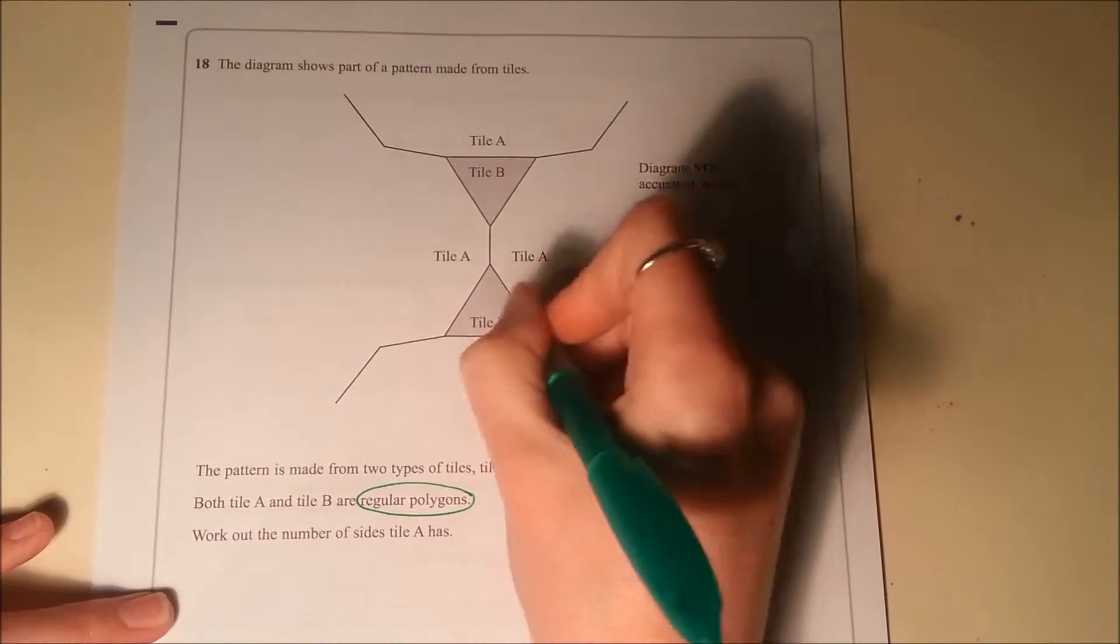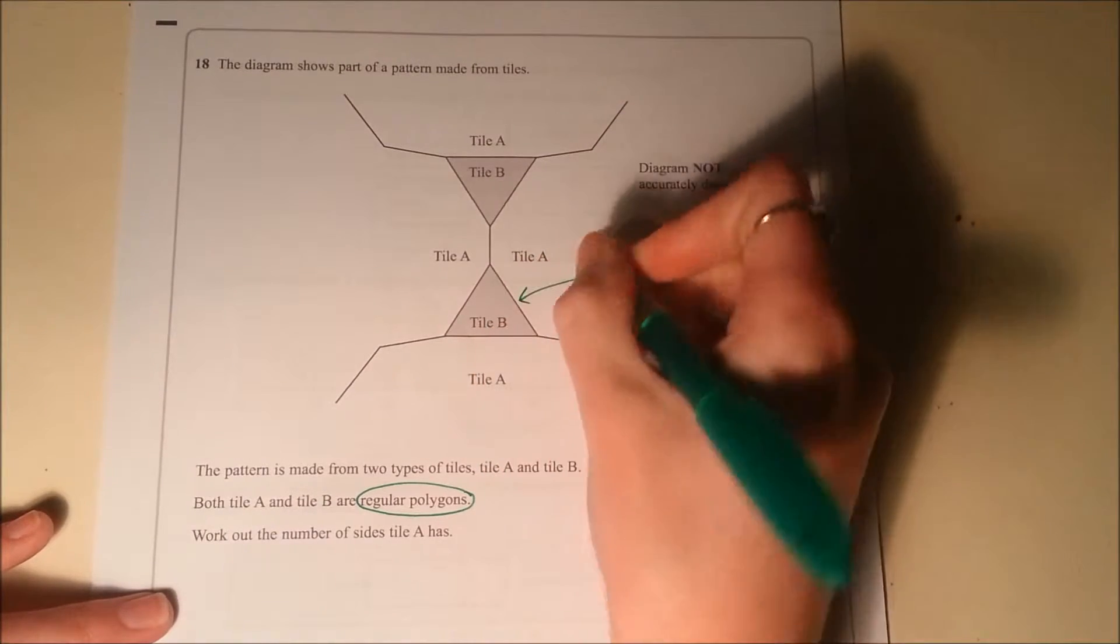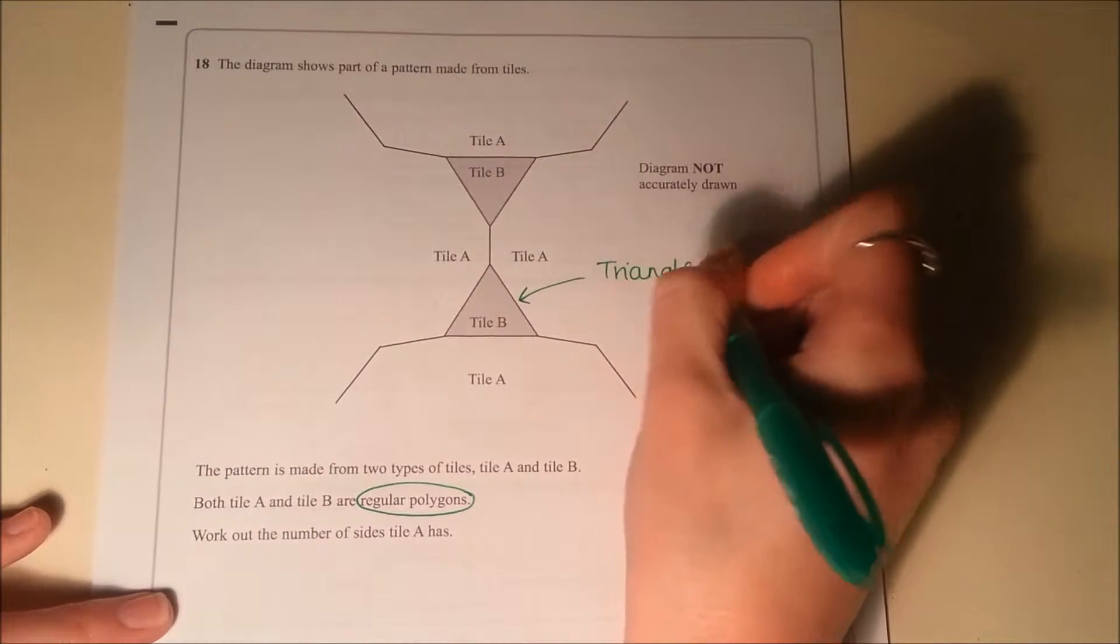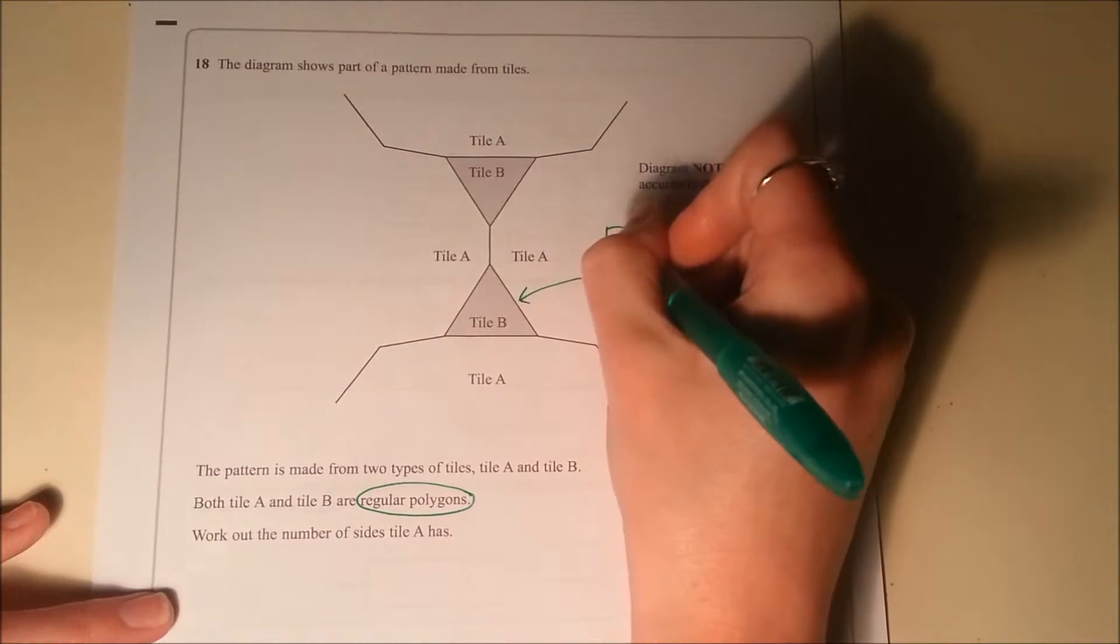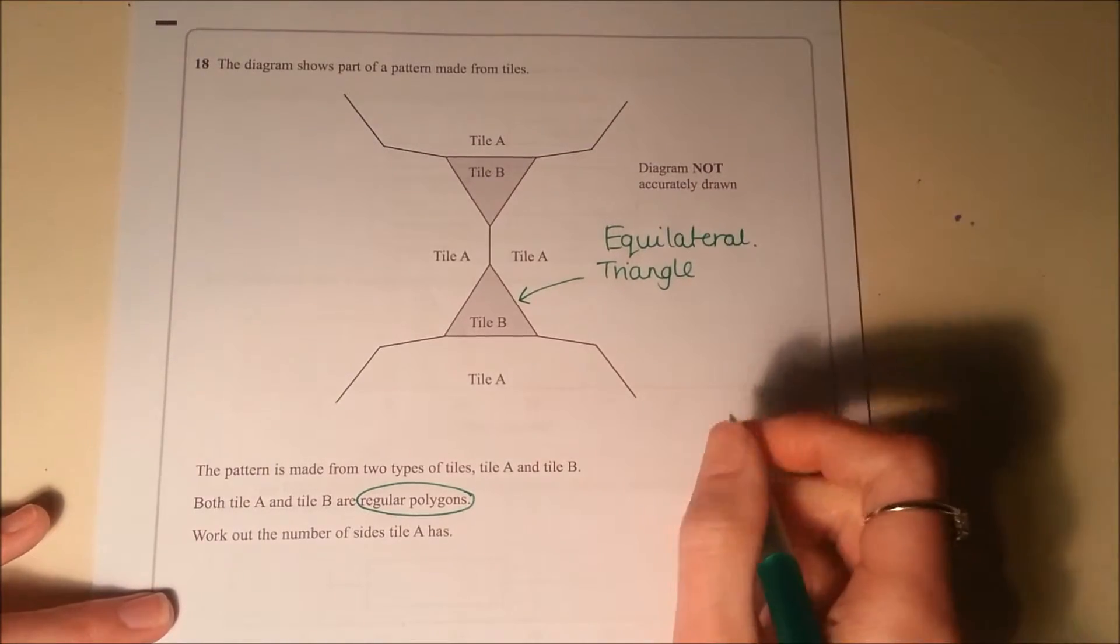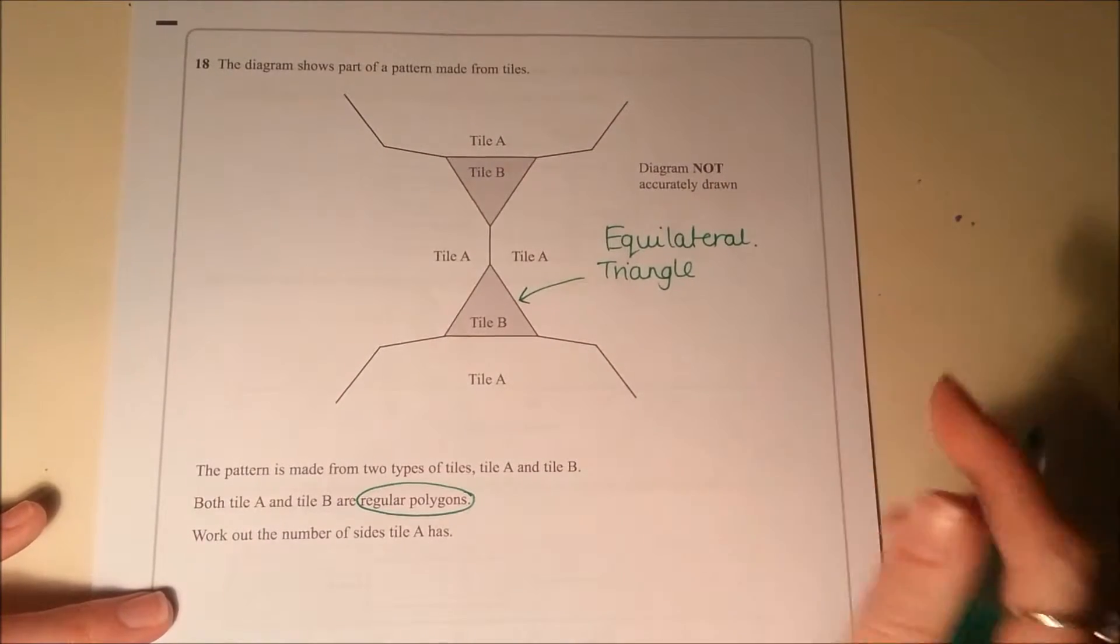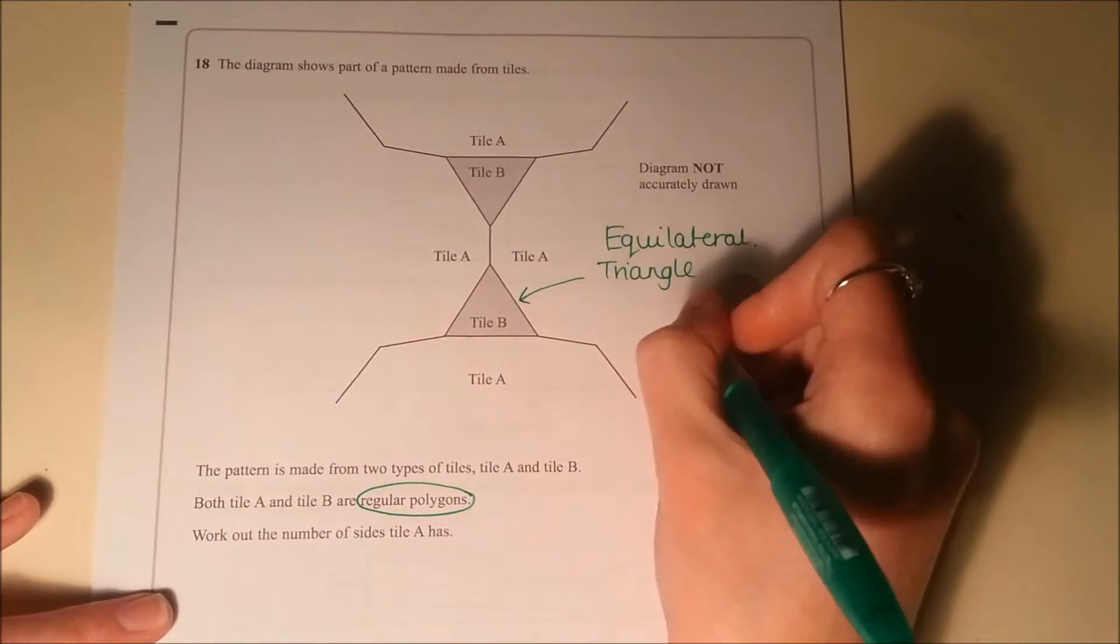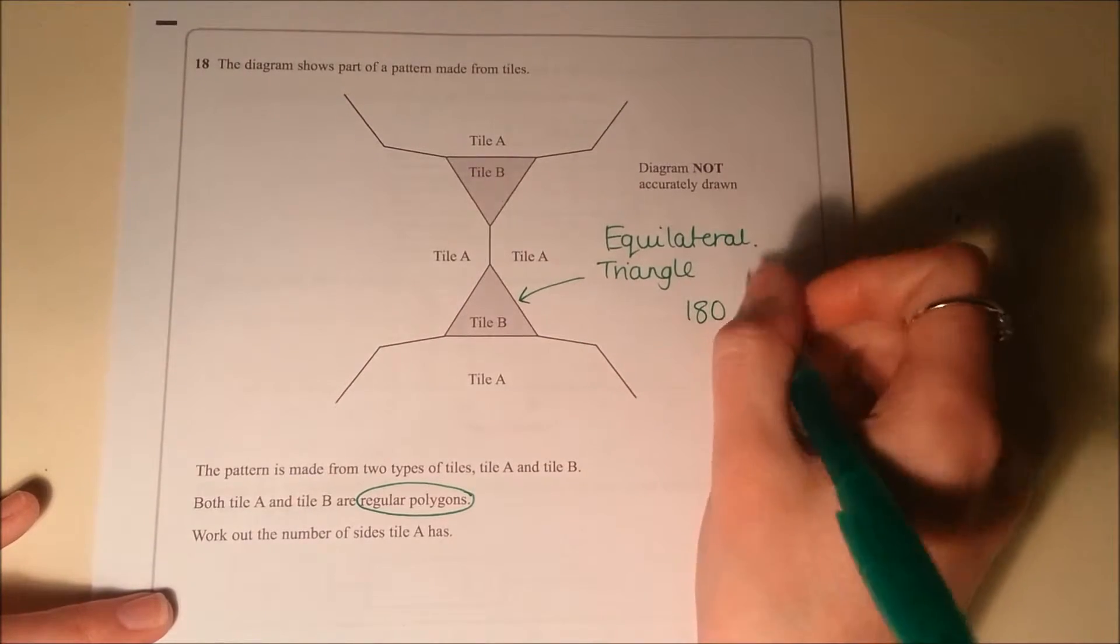You can see that tile B actually is a triangle. Because it's regular, it's going to be an equilateral triangle. So you should be thinking to yourself, well, equilateral triangle, I know that the angles in a triangle add up to 180.